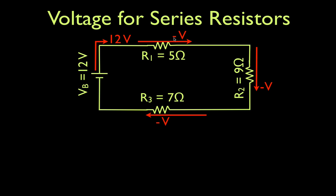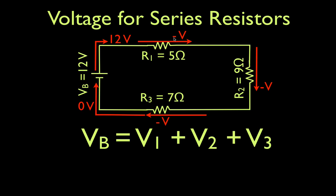The number of electrons per second stays the same, but the energy that they have goes down. In fact, when they come back to the battery, they always have zero energy. So they've given all their energy up to those resistors or to the circuit, and that tells you that the voltage of the battery is equal to the sum of the voltage drops from each of the resistors.